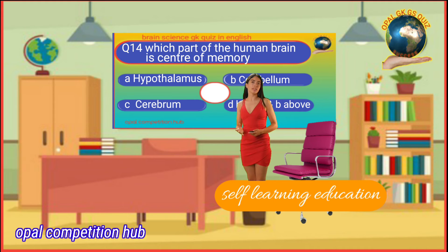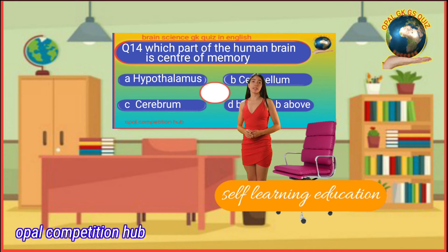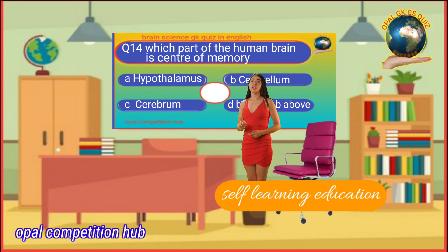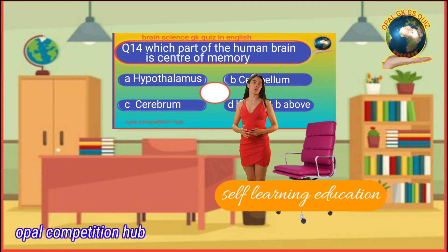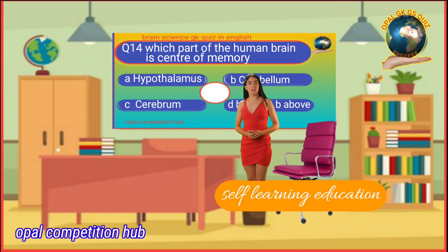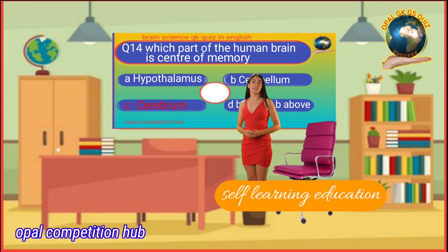Question number 14: Which part of the human brain is the center of memory? Option A: Hypothalamus. Option B: Cerebellum. Option C: Cerebrum. Option D: Both A and B. Your time starts now. Your answer will be Option C: Cerebrum.